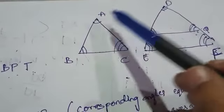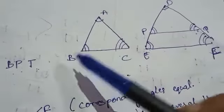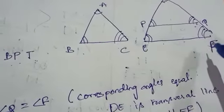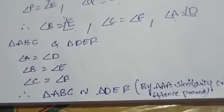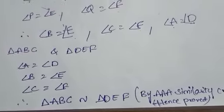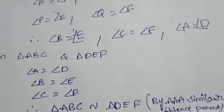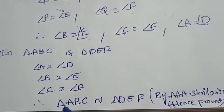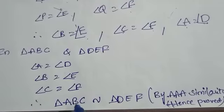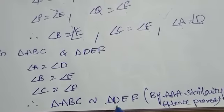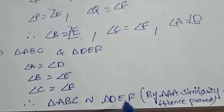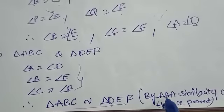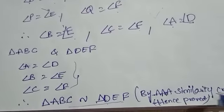Since corresponding angles are equal in triangle ABC and triangle DEF, triangle ABC is similar to triangle DEF. This completes the proof using the Angle-Angle-Angle (AAA) similarity criteria.